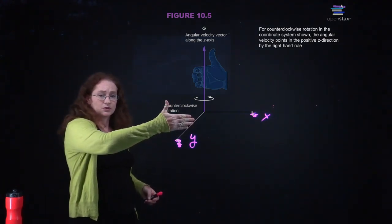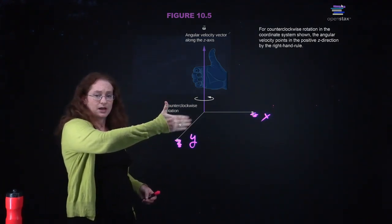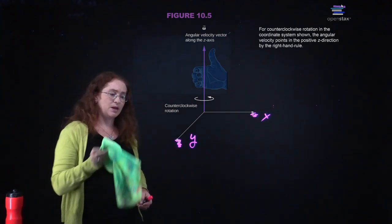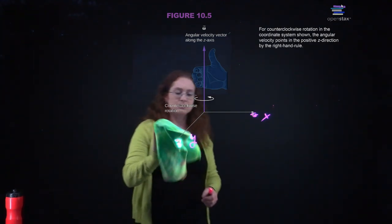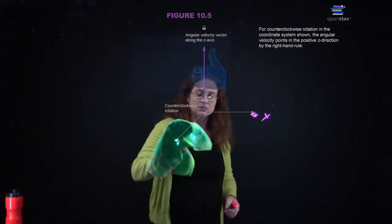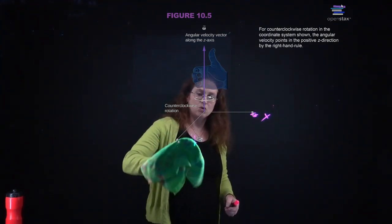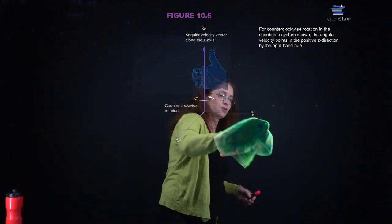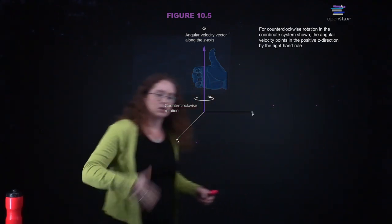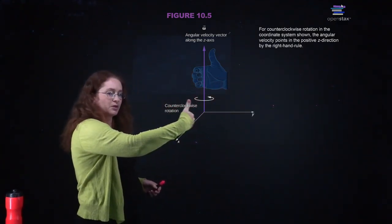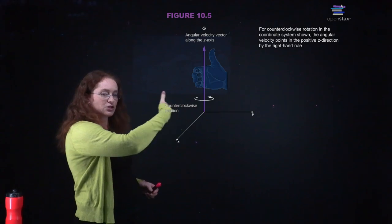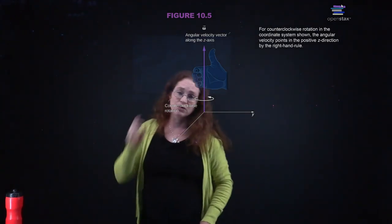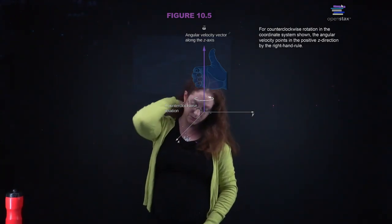You can get this with the right-hand rule. Here, x cross y is equal to omega. Curl your palm in the direction of rotation, and your thumb points along the angular velocity vector.